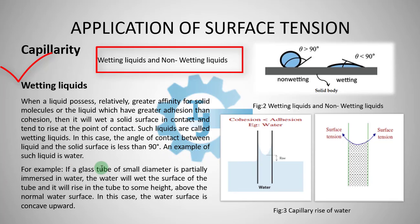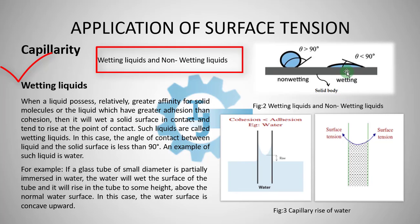An example of a wetting liquid is water. In case of wetting liquid, the angle of contact is less than 90 degrees, or we can also say acute angle. In case of wetting liquids, the cohesion is less than adhesion — that is, adhesion is more than cohesion. So due to more adhesion, the liquid tends to wet the solid surface.